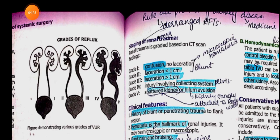Now the stages of renal trauma — very important. In stage 1, there is just a contusion: a small hematoma and bruises on the kidney region. In stage 2, there is laceration — a small tear in the kidney.